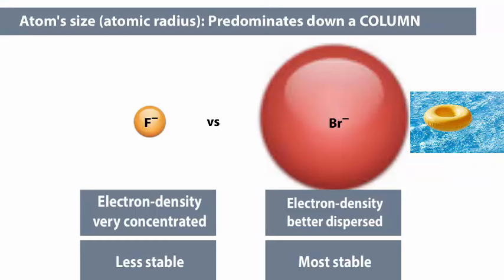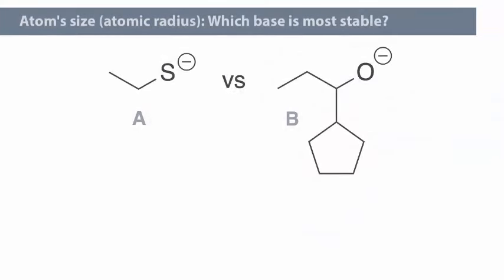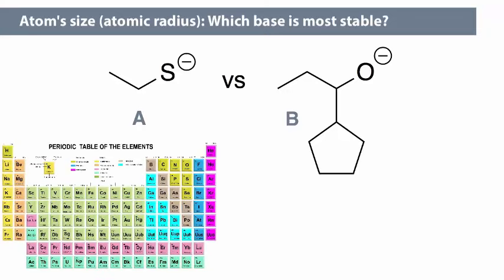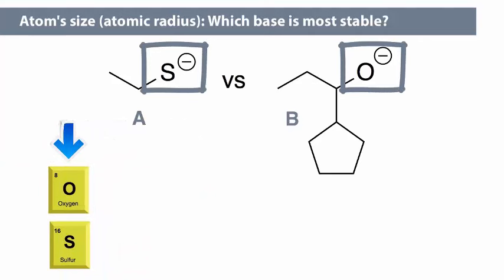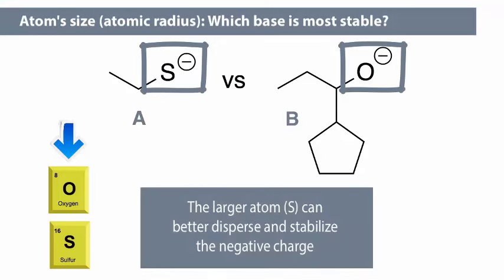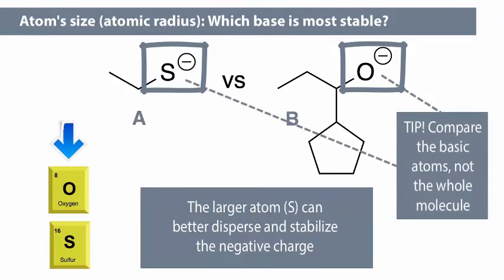Bromide is more stable than fluoride. Here is another example: which base is most stable? The important part lies in the atom that is carrying the negative charge. Sulfur and oxygen are in the same column of the periodic table, so atomic size, or radius, is the most important factor affecting their stability. Sulfur is larger than oxygen, so the sulfur atom can better disperse the negative charge. Notice that we are not comparing the entire molecule, just the atom acting as the base, called the basic atom.